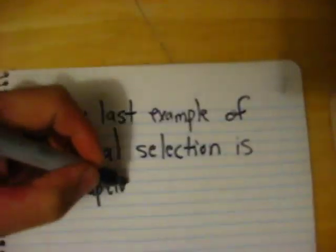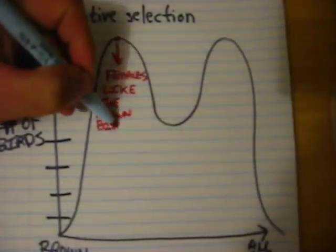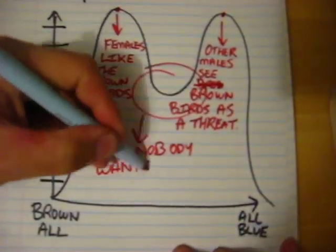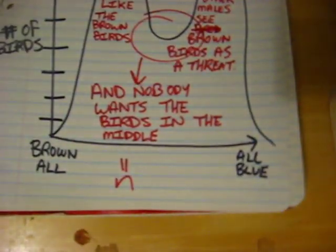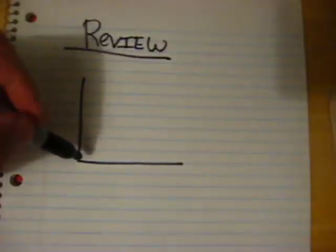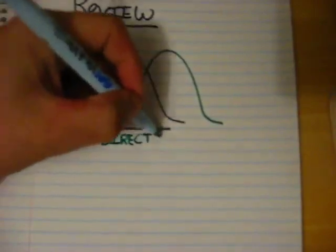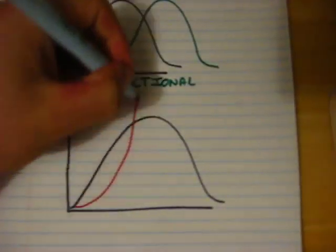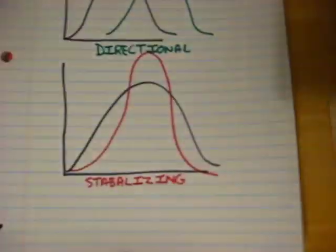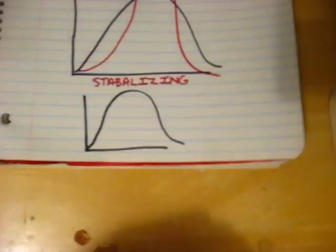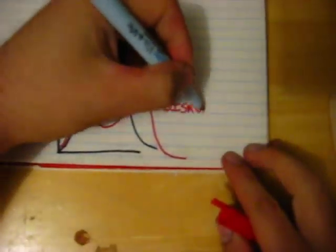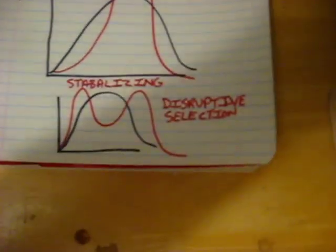The final type of selection is called disruptive selection, and it's somewhat complex because it deals with animal social behavior. Imagine a bird that can have all brown feathers, all blue feathers, or somewhere in the middle. Females prefer the brown birds, but other males see brown birds as a threat and try to kill them. Because nobody wants the birds in the middle, this is disruptive selection — on a graph, the middle of the mean goes down and both sides are high, because nothing in the middle is favored.